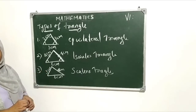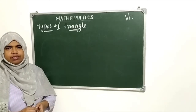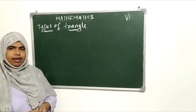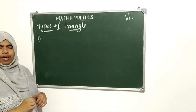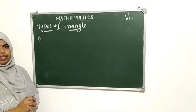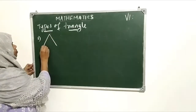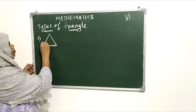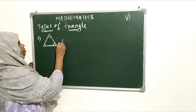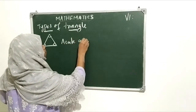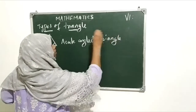This is an important property of triangles. Now let us characterize the triangles on the basis of their angles. First: if all angles of a triangle are acute angles, then it is called an acute angled triangle. All angles are less than 90 — that is an acute angled triangle.